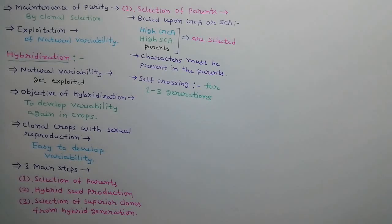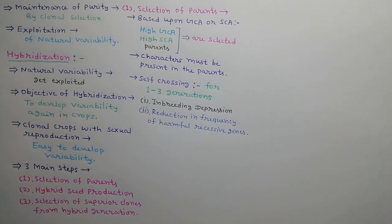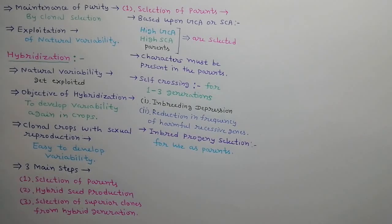Parents are self-crossed for one to three generations. It has two effects on parents: inbreeding depression and reduction in frequency of harmful recessive genes. Now, from these inbred progenies, vigorous and superior plants are selected and are used as parents.